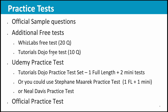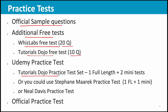Once the first round of reading is done, start with the practice tests. I started with the official sample questions. You may also try some additional free tests available online, such as Wizlabs free test of 20 questions or Tutorials Dojo free test of 10 questions. Then you can buy practice tests — I bought two: Tutorials Dojo and Stephen Marek's. Tutorials Dojo has one full-length test plus two mini tests, and Stephen Marek has one full-length plus one mini. After completing these, go for the official practice test.